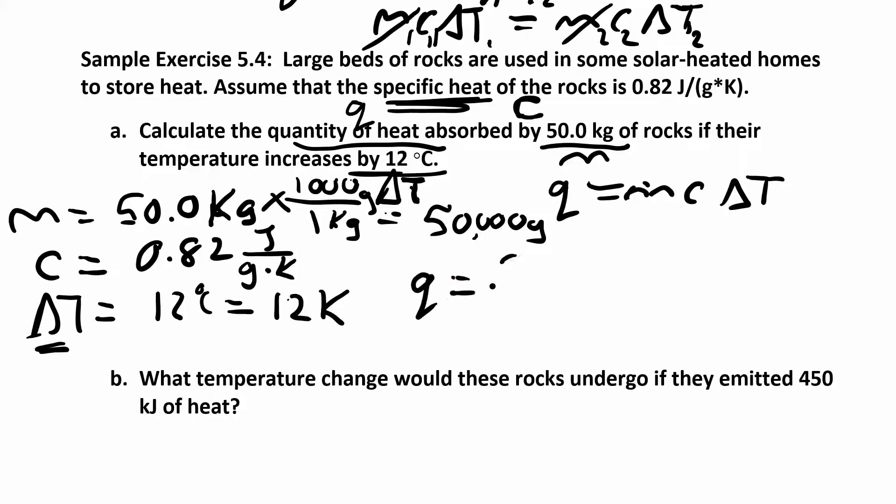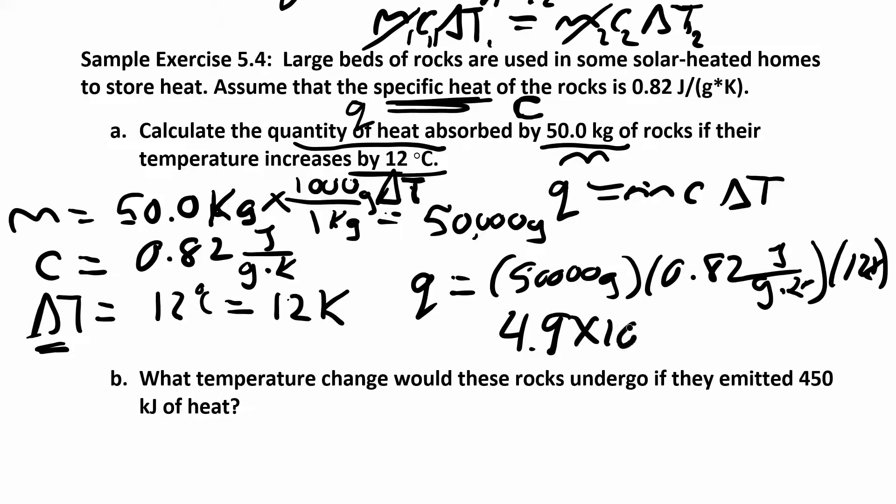Now you can just plug that in. So q is equal to m, which is 50,000 grams, c, which is 0.82 joules per gram K, and ΔT was 12K. When you work all that out, you put in scientific notation, you end up with 4.9 times 10 to the 5 joules.